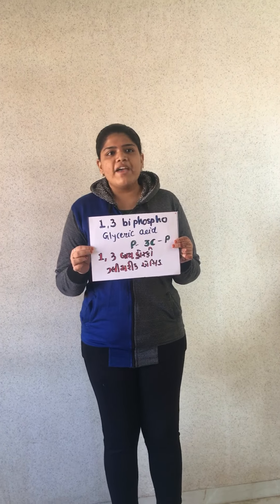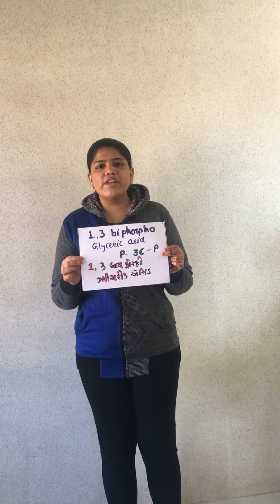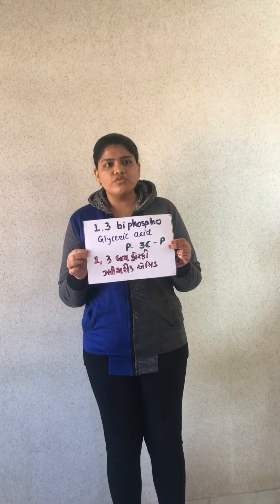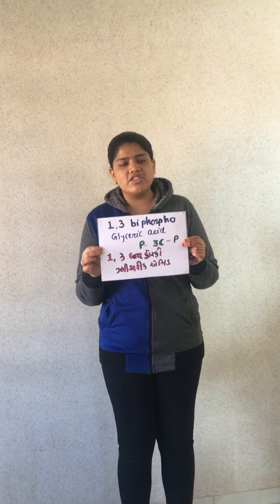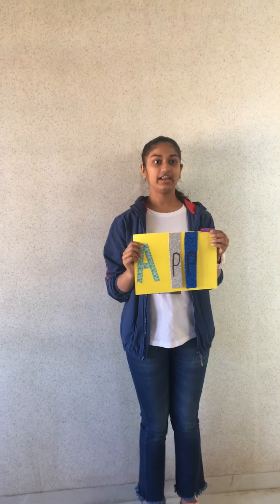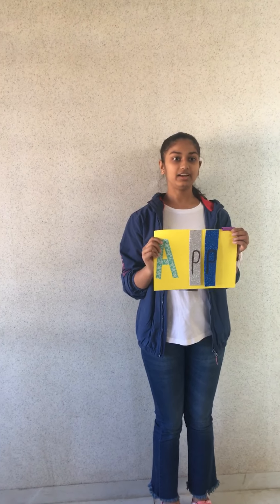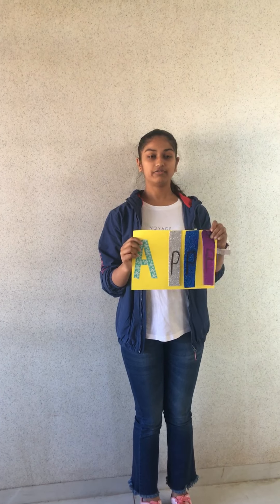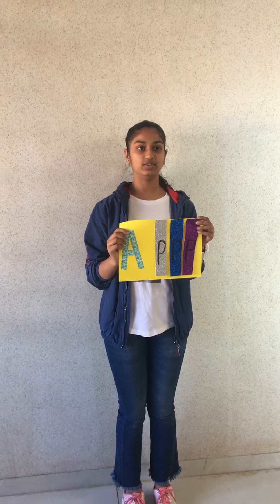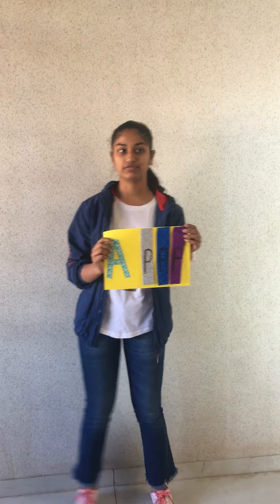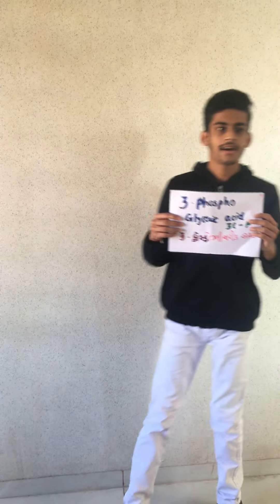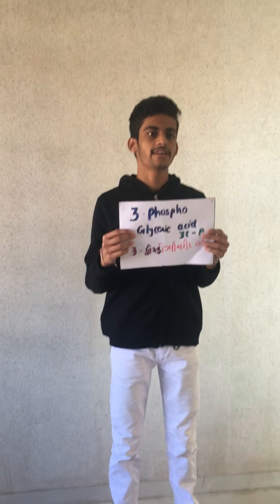I am 1,3-bisphosphoglyceric acid. I have 3 carbons and 2 phosphates, and my dephosphorylation occurs. I am ADP, adenosine diphosphate. I receive 1 phosphate from 1,3-bisphosphoglyceric acid and I become ATP, adenosine triphosphate. I am 3-phosphoglyceric acid; I have 3 carbons and 1 phosphate.